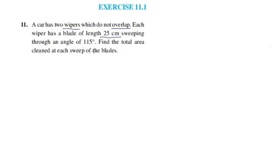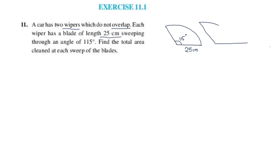This is the length of the blade, and we have a wiper sweeping this width. The angle is 115 degrees. This is 115 degrees and the length of the blade is 25 cm. Find the total area cleaned at each sweep.